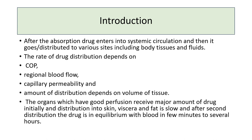The rate of distribution is dependent on the cardiac output, regional blood flow, and capillary permeability. The amount of distribution depends on the volume of tissue. Well-perfused organs receive more drug initially, then it is redistributed toward the skin, viscera, and fat. After this secondary distribution, the drug reaches equilibrium in the body within a few minutes to several hours.